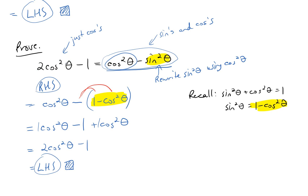There are lots of examples using Pythagorean identities combined with basic algebra — factoring, distributing, and similar techniques — to simplify expressions and complete proofs.